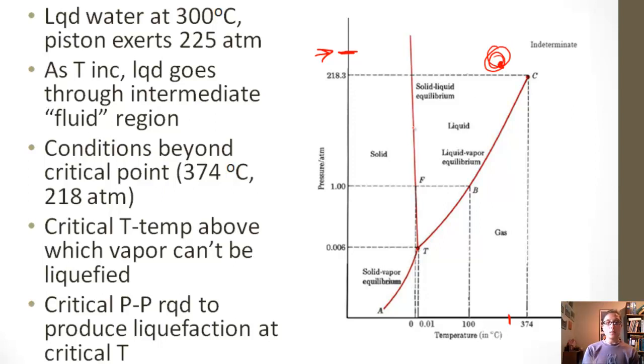Normally as we heated, liquid would go to a gas. But at this high pressure, it goes to this intermediate what's called fluid region. The reason it does this is because the conditions are beyond what we're going to call the critical point. The critical point is 218.3 atmospheres and 374 degrees Celsius. Where this C is, that's the critical point.